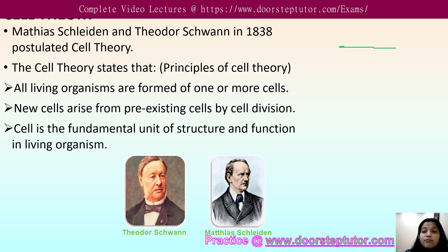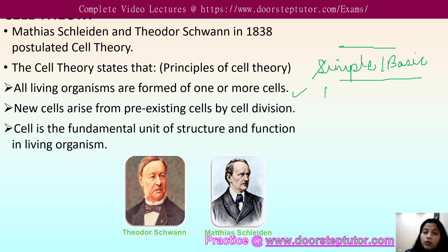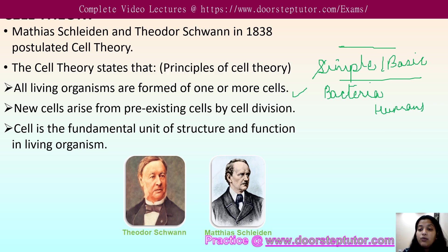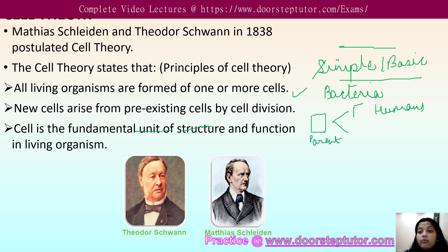What is the cell theory? These are basic principles related to cells. The first principle is that all organisms are made up of one or more cells — for example, bacteria are made up of one cell, while humans are made up of more than one cell. The second principle is that cells arise from pre-existing cells, meaning a parent cell divides to form new cells.